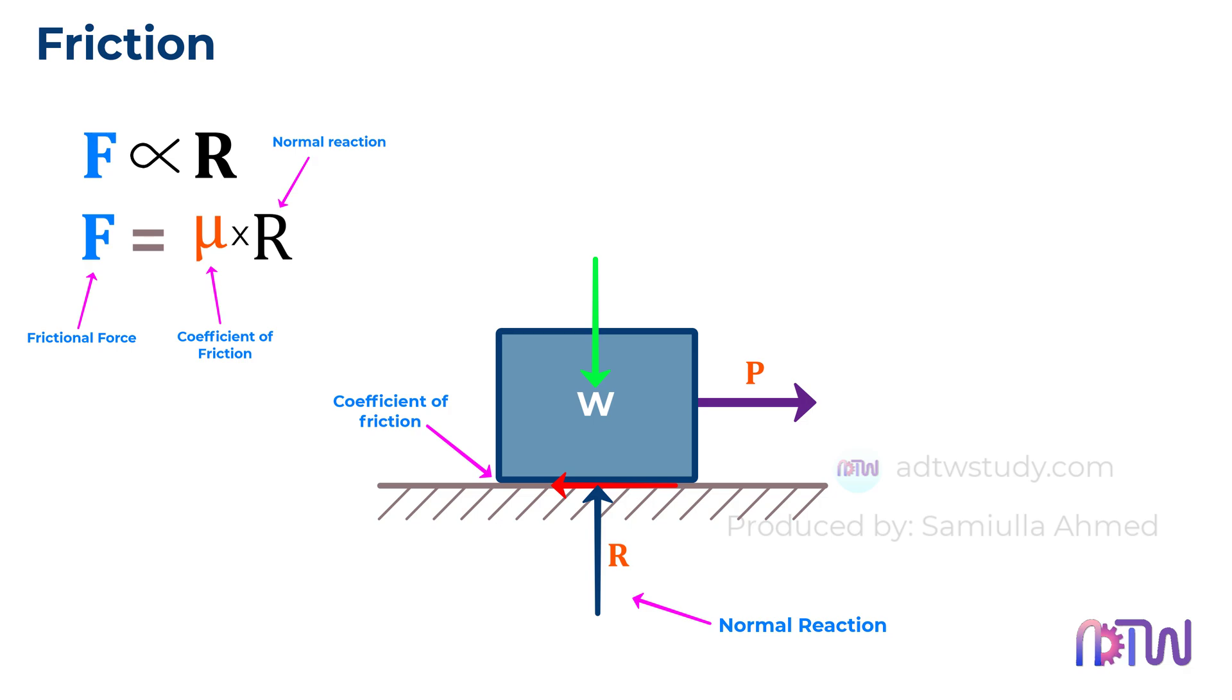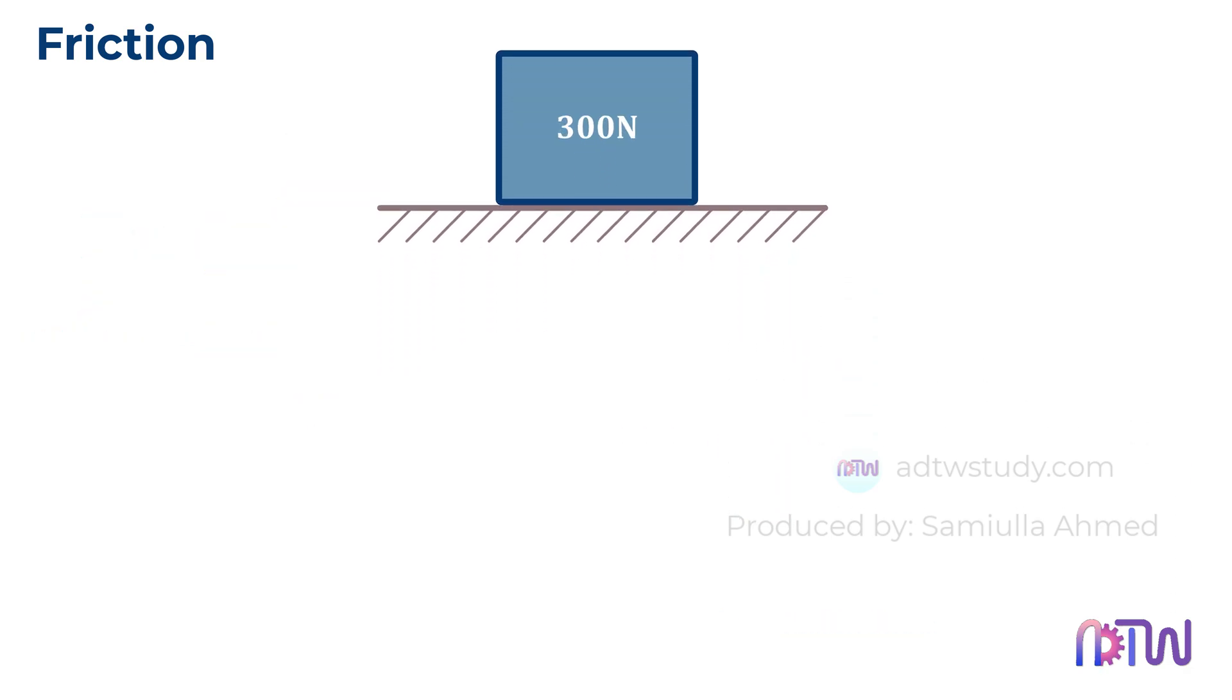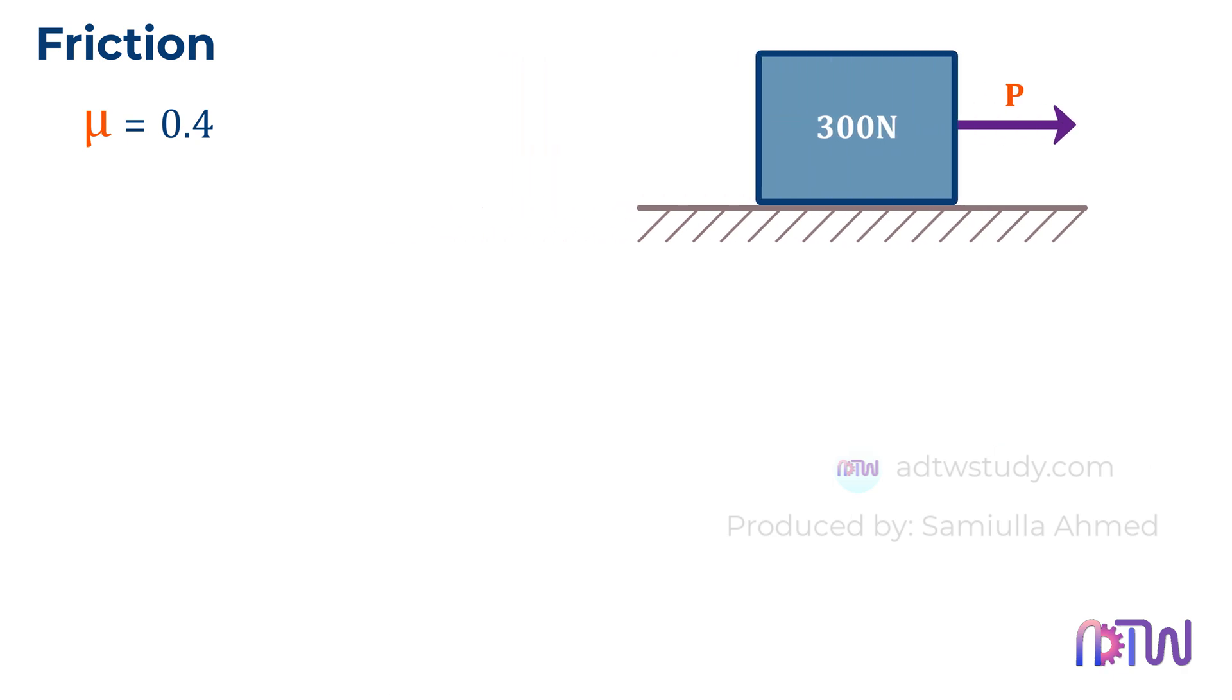Let's see an example to understand this better. Consider a box with a weight of 300 newtons resting on a flat surface. The coefficient of friction between the two surfaces is given as 0.4. We need to find out the force P required to move this box. Apart from this figure, we draw another figure called the free body diagram. A free body diagram is a simplified representation showing all the different forces acting on a body.